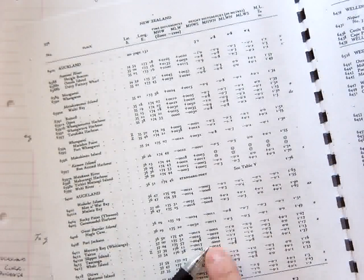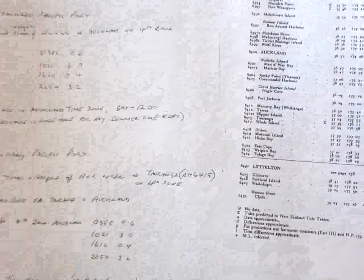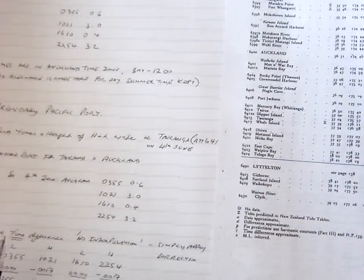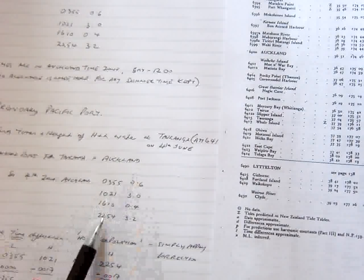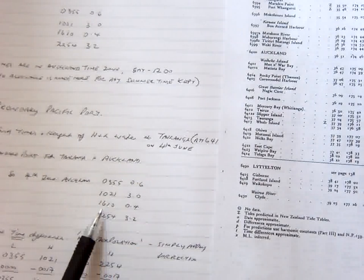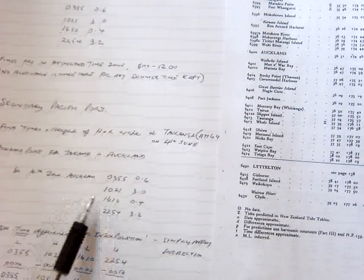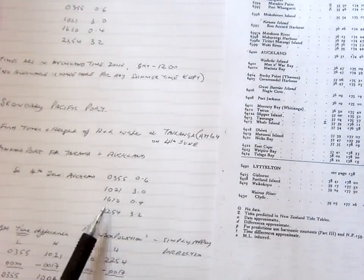So what we do with this now, with Turanga, we look up for the 4th of June, the times of high water and low water for Auckland. Because Auckland is the standard port. So I've gone to the tables for Auckland for the 4th of June, and I've written down the 4 times of high water and low water.